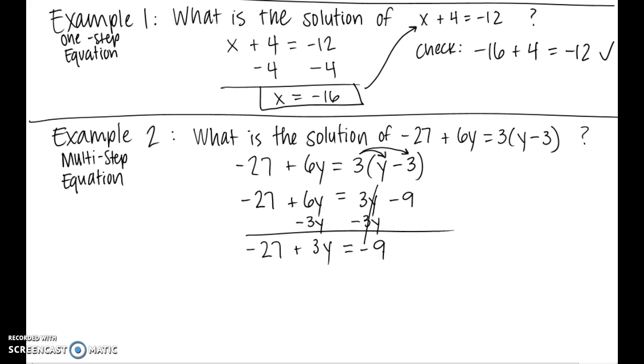From there, it's only two steps left, and I think most of us are very comfortable with two steps. So you want to add 27 to both sides to get rid of that negative 27, and those 27's cancel. 3y equals 18. And the last step is division because that 3 and the y are attached by invisible multiplication. So divide both sides by 3 and we get y equals 6. So that is our solution.